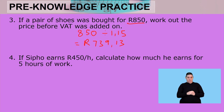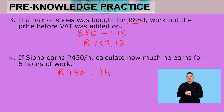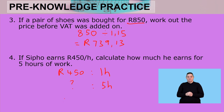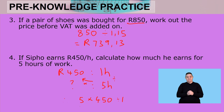Finally, question four: If Sipo earns R450 per hour, calculate how much he earns for five hours of work. The rate here is R450 per hour. We use a semicolon to separate rand on the left-hand side from time on the right-hand side. We have five hours, so we multiply: 5 times 450, divided by 1, and we get R2,250.